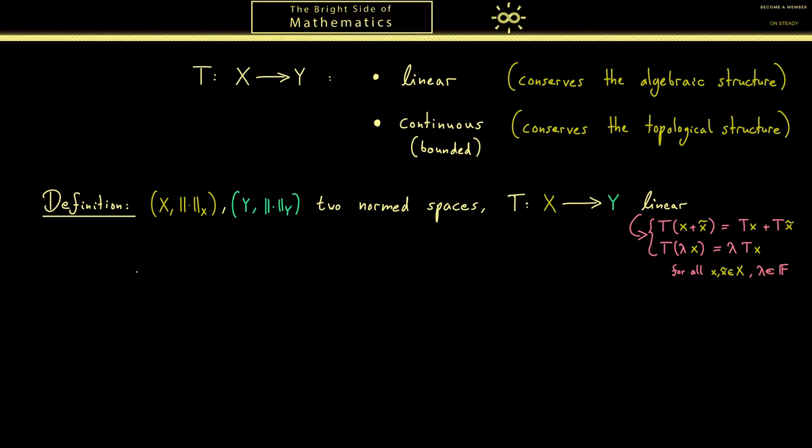Now what we want is the length of this linear map, so we want a norm for the operator. Hence this is then often called just the operator norm of T. And if we want to emphasize the spaces the map acts on we have to put them in the index. However most of the time we will omit them there because the corresponding normed spaces are known from the beginning.